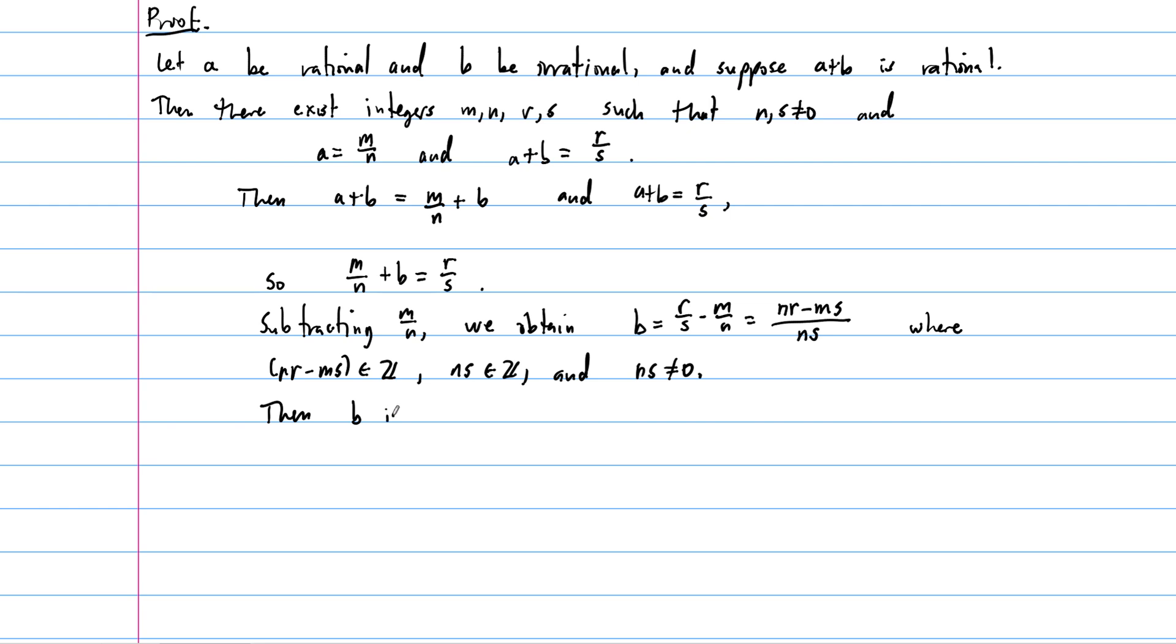Why is it rational? Because it's written now as a fraction of integers, a ratio of integers that obey the definition of a rational number. But this is a contradiction. B was assumed to be irrational, and we just showed that with our supposition up here, that A plus B is rational, we arrive at this contradiction that B should be rational.